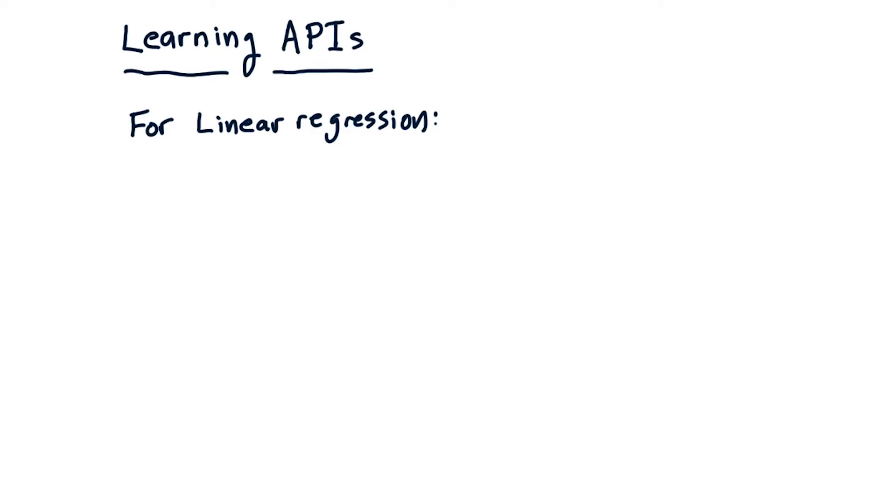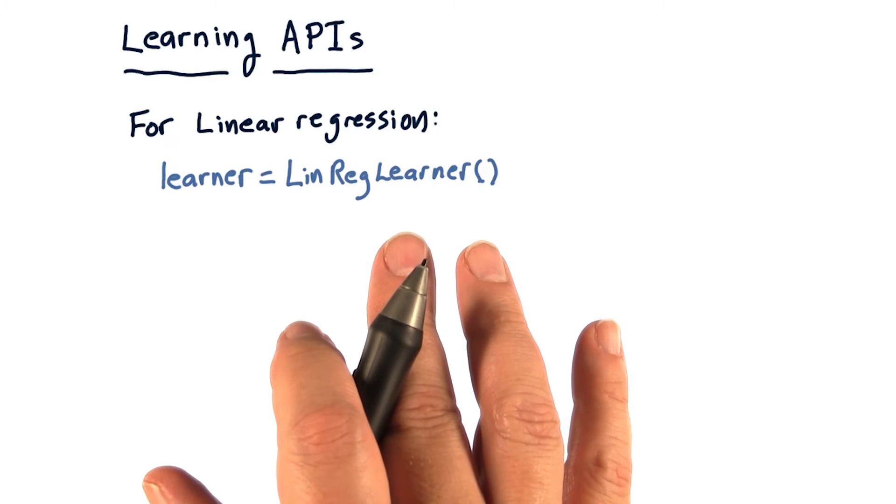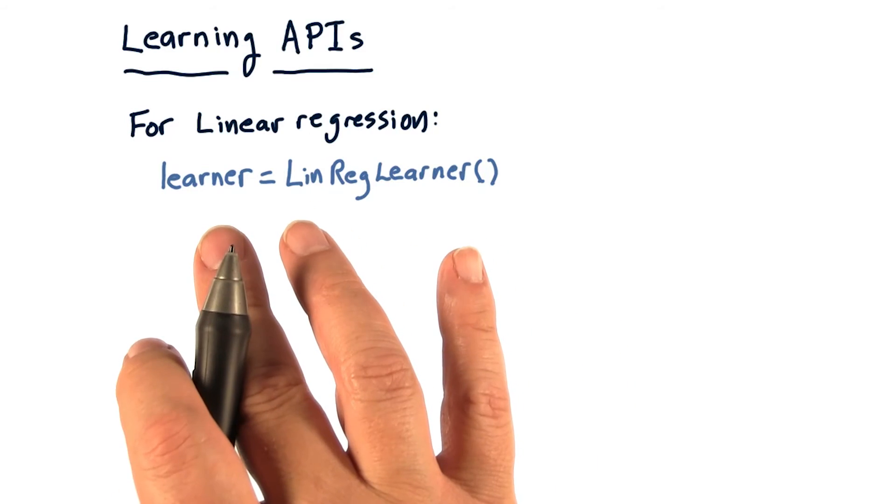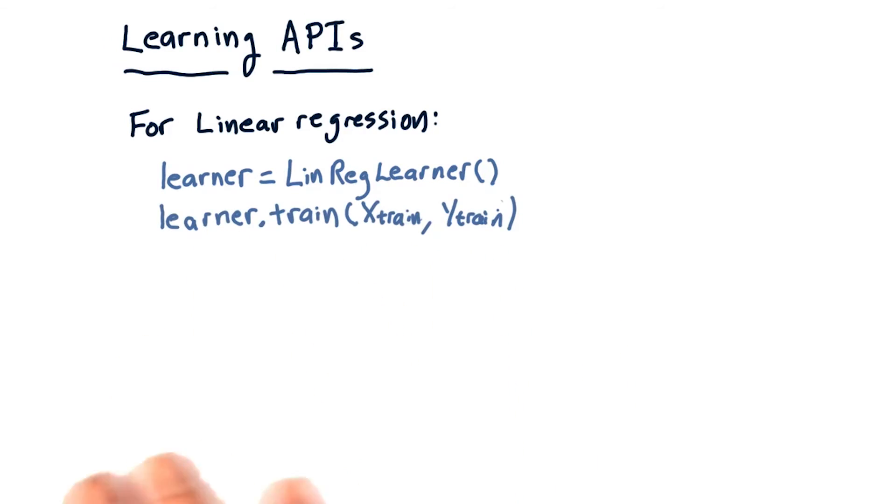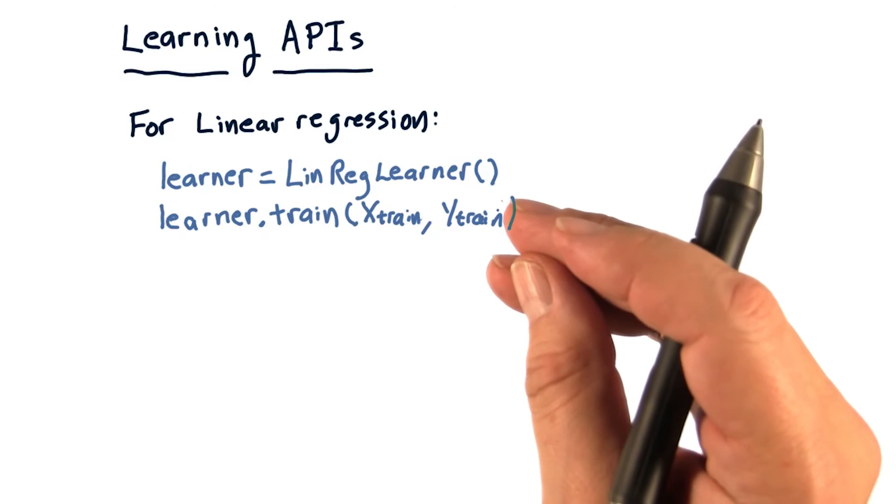For a linear regression learning algorithm, your API ought to implement something that works like this. A constructor that creates an instance of one of these learners, which is now learner. A method called train that can take our training data and train the model.